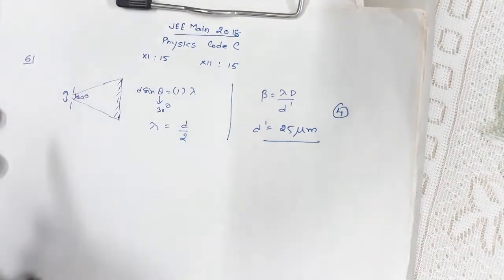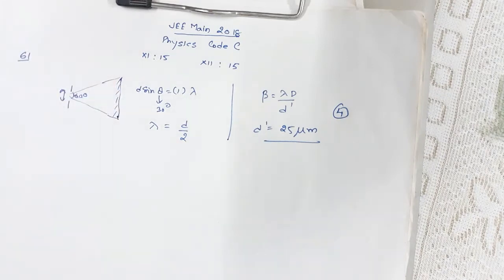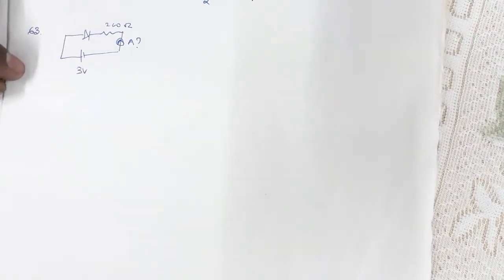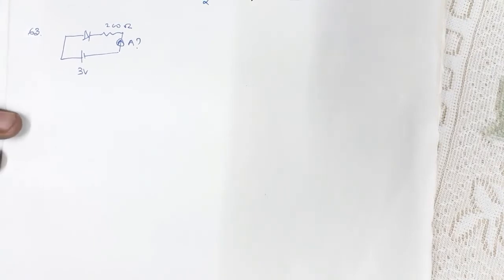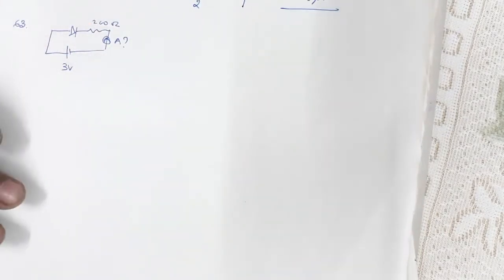So for Code C question number 61, the correct answer is option 4 — 25 micrometers. In question number 63, you have a circuit where a diode is forward biased, connected to a source of 3 volts with a 200 ohm resistor. You are asked to calculate the current flowing in this circuit.